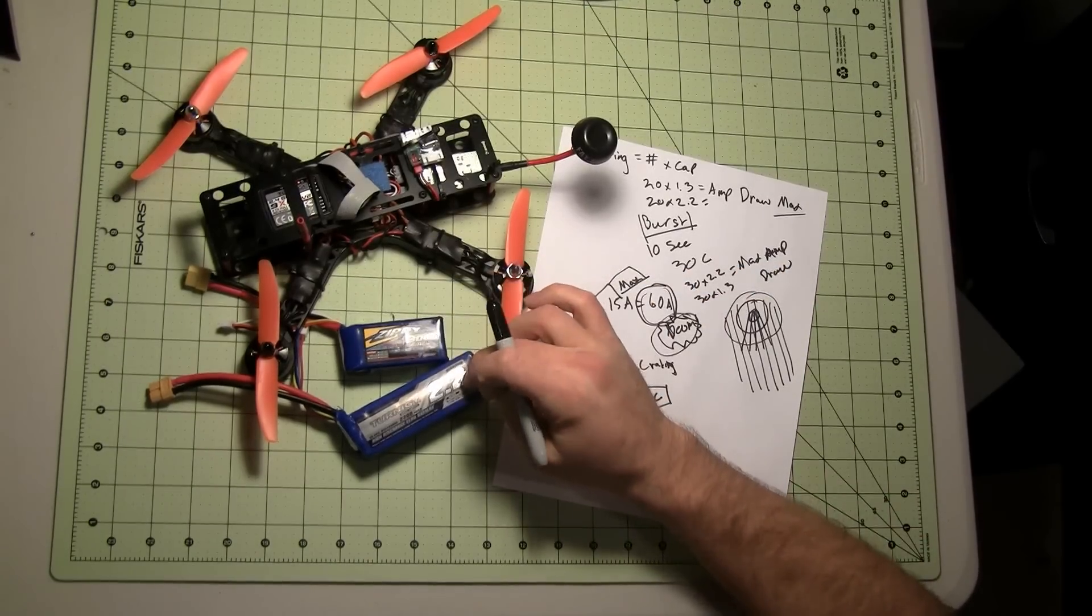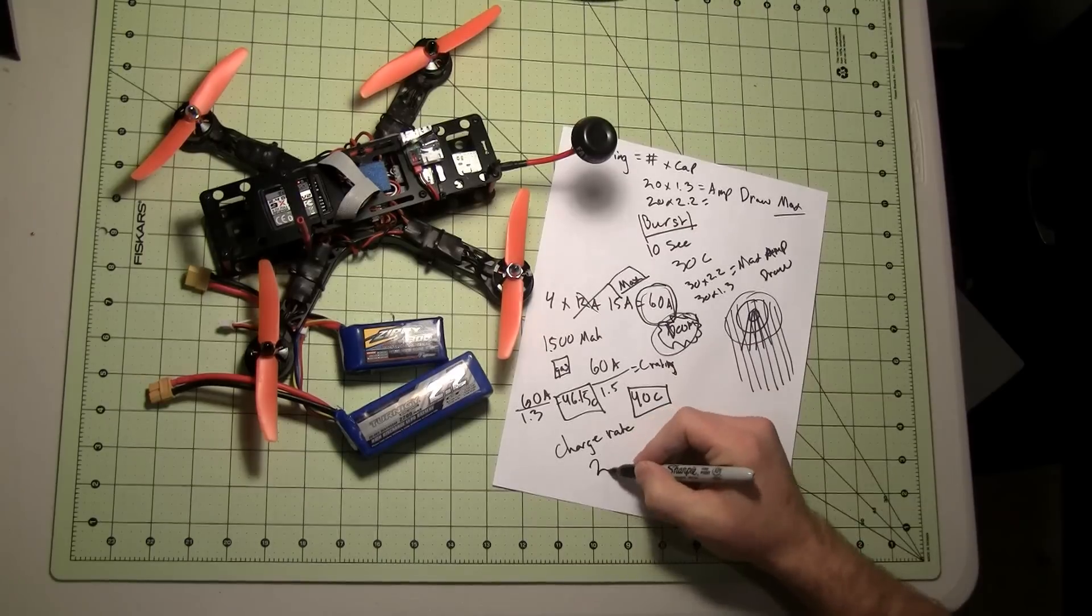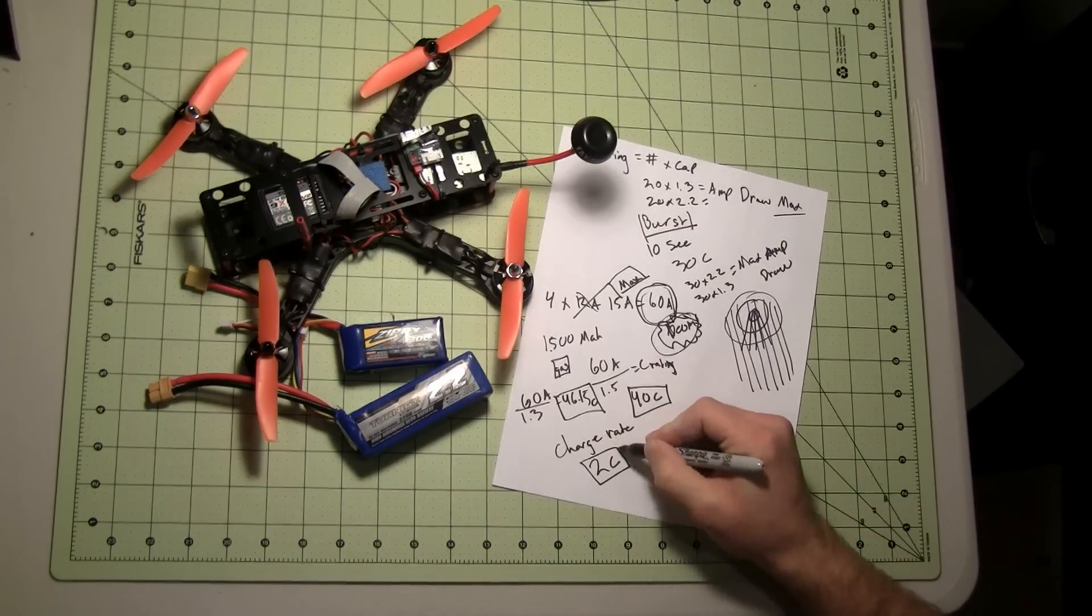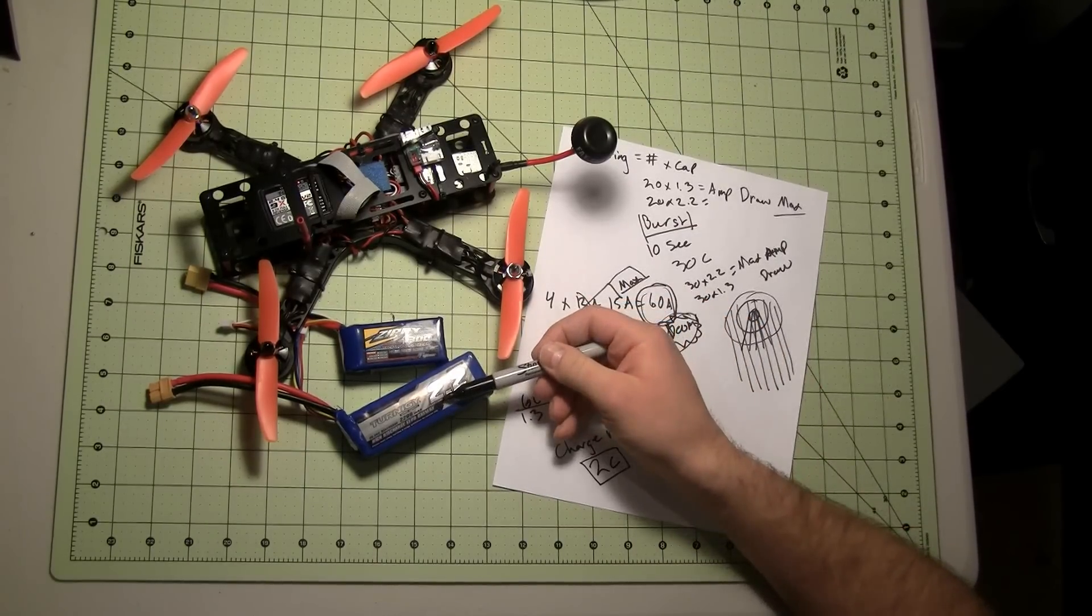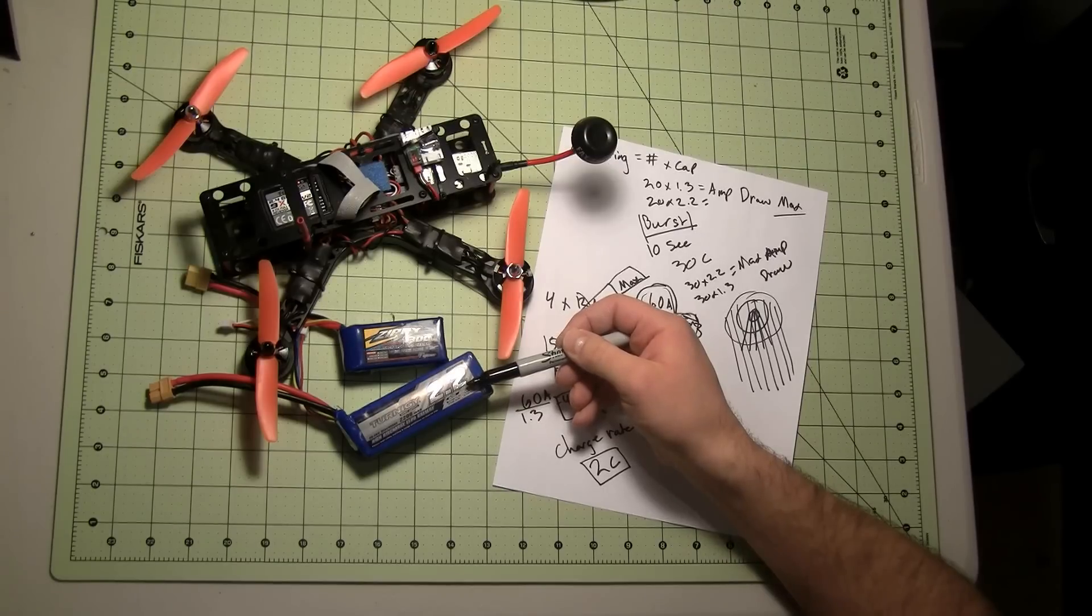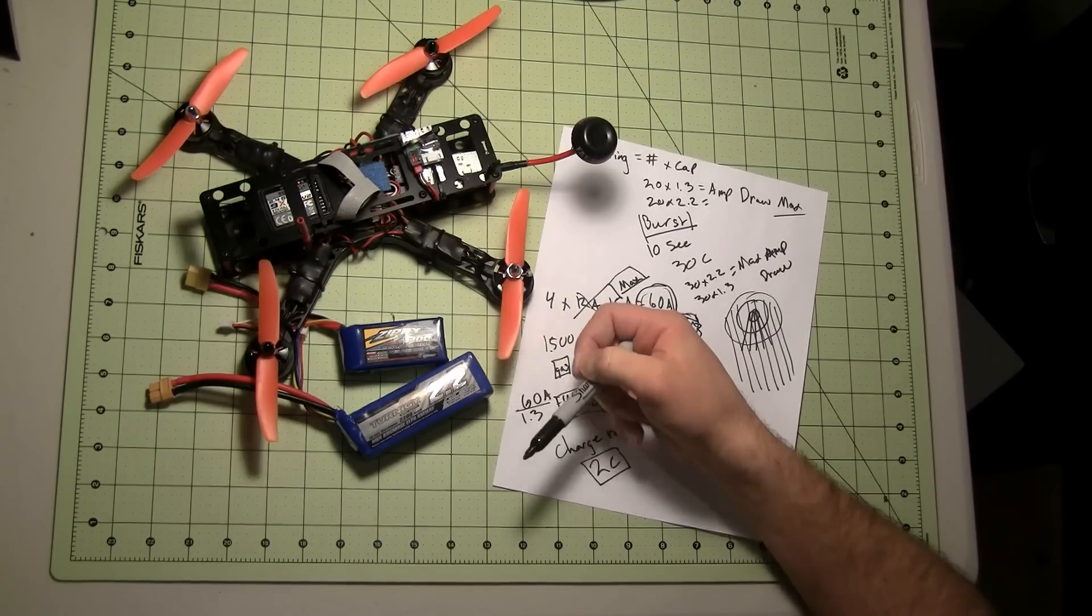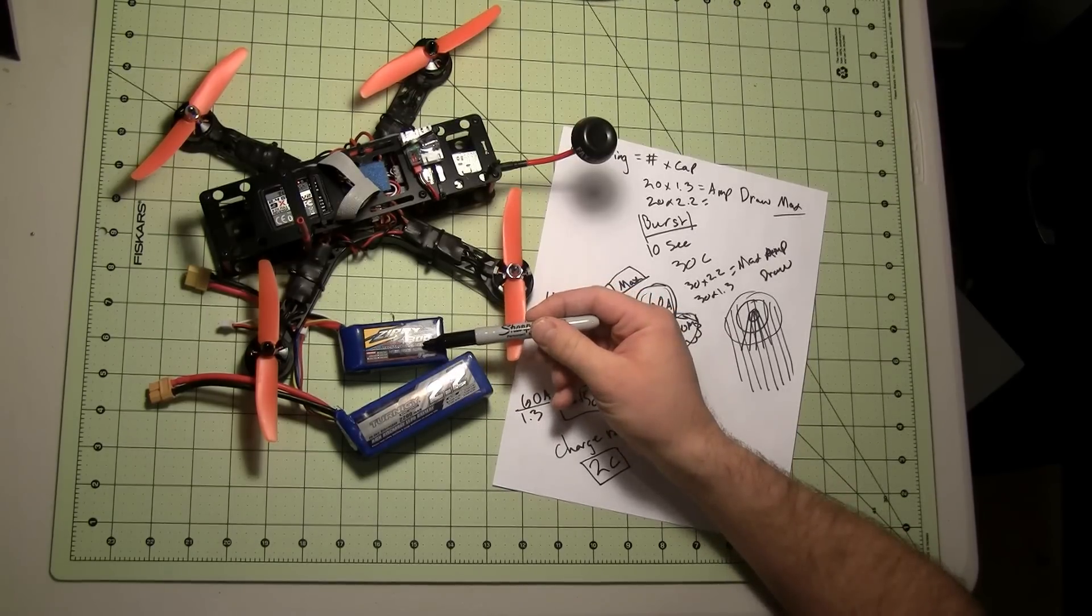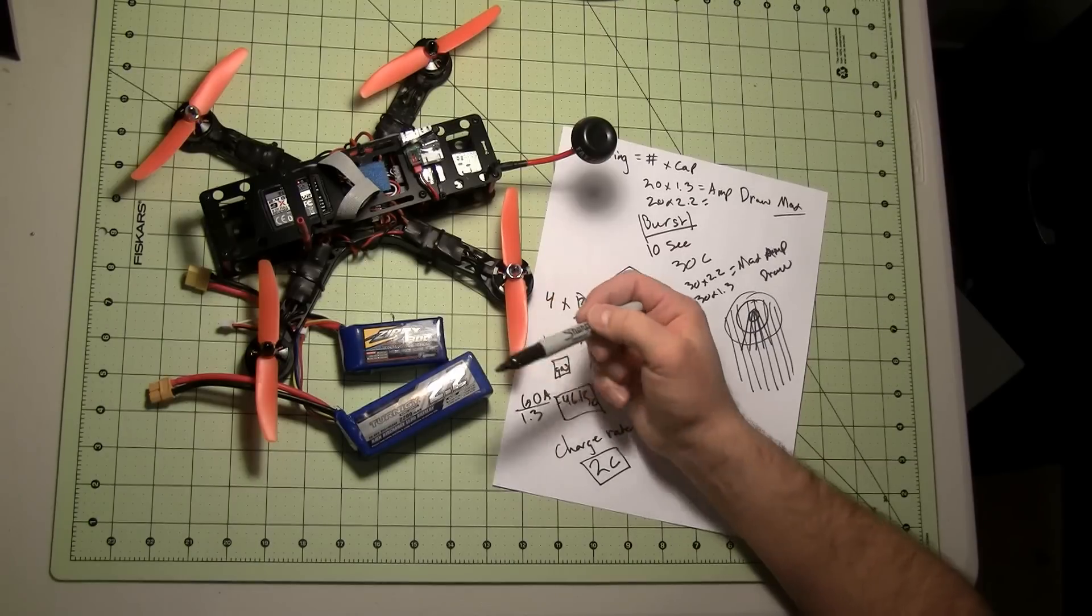These Zippy FlightMax and these basic Turnigys, you shouldn't really go past 2C. So I could charge this Turnigy 2.2 amp, or 2200 milliamp hour battery, at 4.4 amps. And I could charge the 1300 milliamp hour Zippy at 2600.